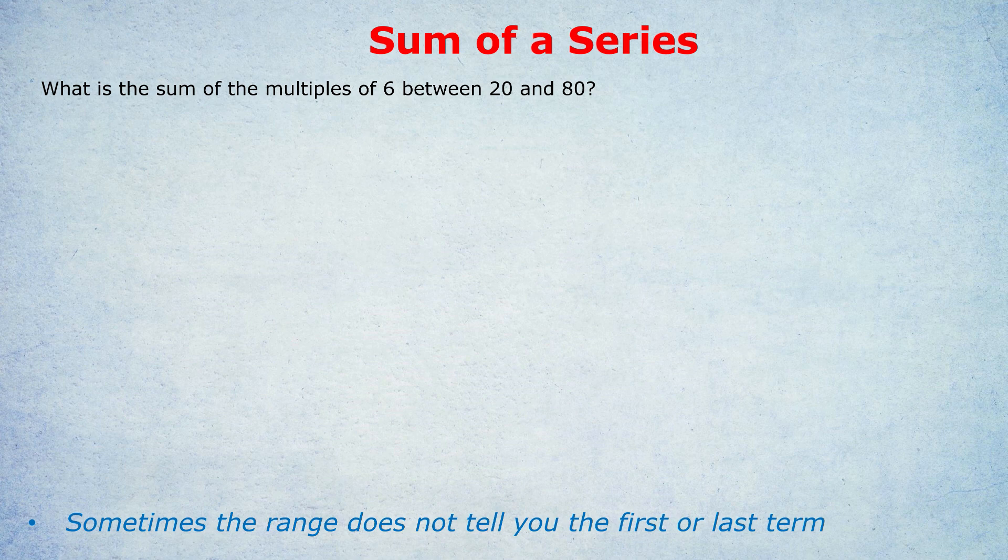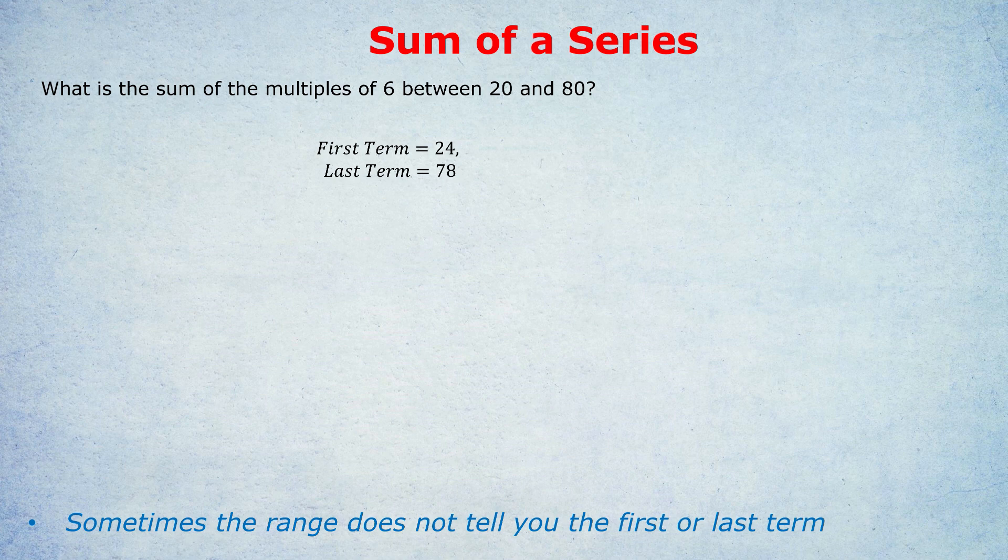So what is the first multiple of 6 between 20 and 80? It will be 24. What is the last multiple of 6 between 20 and 80? Obviously, this relies a bit on your times tables, but it would be 78. And to be honest, the way that I would work that out is just to do 6 times 10 is 60, and then add on a few 6s until we get to our limit of 80. 60, 66, 72, 78. So the last multiple of 6 between 20 and 80 was 78.